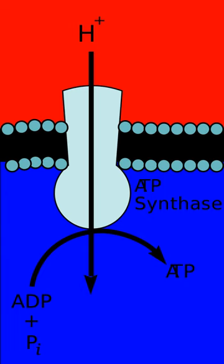Protons in the intermembrane space of mitochondria first enter the ATP synthase complex through an A subunit channel, then move to the C subunits. The number of C subunits determines how many protons are required to make the Fo turn one full revolution. For example, in humans there are eight C subunits, thus eight protons are required. After the C subunits, protons finally enter the matrix using an A subunit channel that opens into the mitochondrial matrix. This reflux releases free energy produced during the generation of the oxidized forms of the electron carriers, and is used to drive ATP synthesis, catalyzed by the F1 component of the complex. Coupling with oxidative phosphorylation is a key step for ATP production.